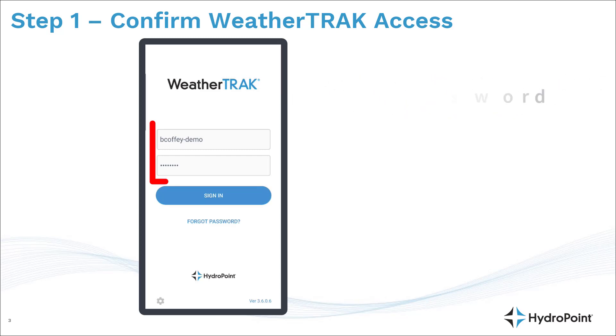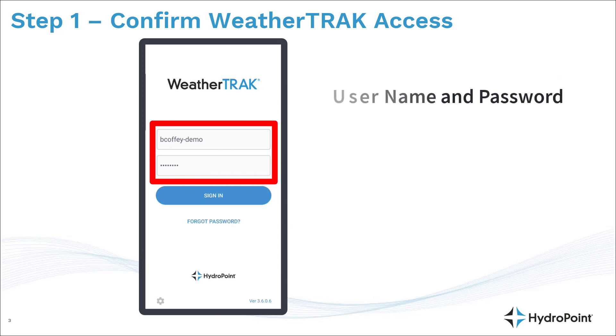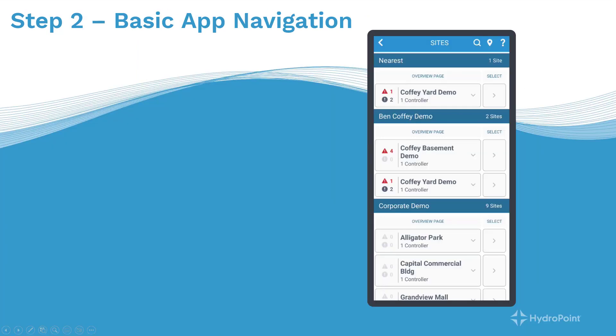For step one, you put in your username and password for WeatherTrack Mobile 3 and log in using your smart device. The first thing you need to know when using WeatherTrack Mobile is some basic app navigation.